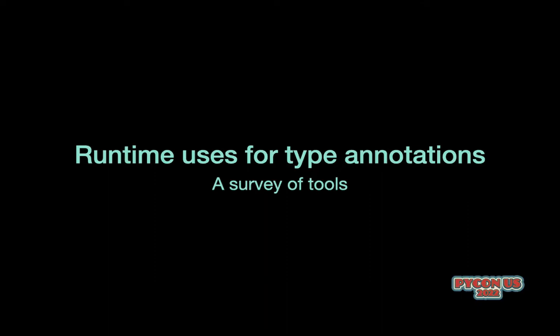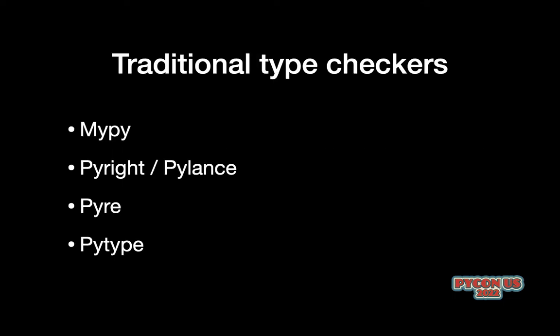I wanted to give an overview of a number of tools that are in the Python typing ecosystem right now which manipulate type annotation objects at runtime. There's a lot of interesting things being done here, so I did a survey of all the libraries that are doing this type of thing that I could get my hands on.